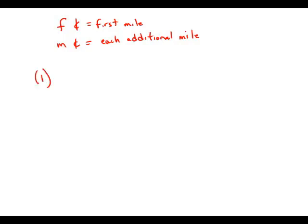Statement number one tells us that the company charges 90 cents for a two-mile ride. And so, that is 0.90 equals F for the first mile plus M for the second mile. So that alone does not allow us to solve for the value of F and M.